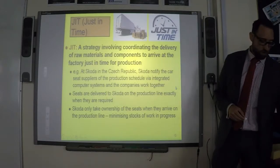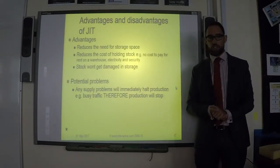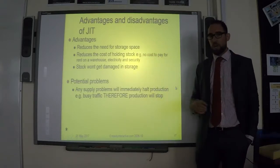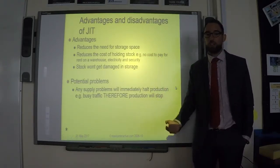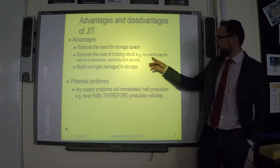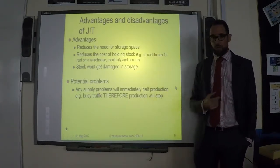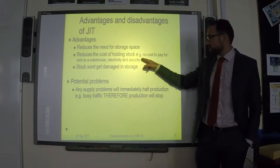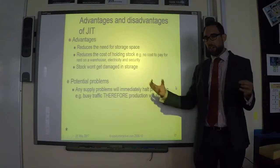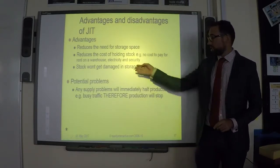The benefit of getting raw materials to arrive just when you need them is that they go straight into production and you don't have to store them. If raw materials arrive a week early, you have to store them, which is expensive — you'd need to pay for a warehouse, electricity, and security. With JIT, you don't need a warehouse or those additional costs because as soon as materials arrive, they're used immediately. Stock can also get damaged in storage or go out of trend, both of which are problems avoided with JIT.